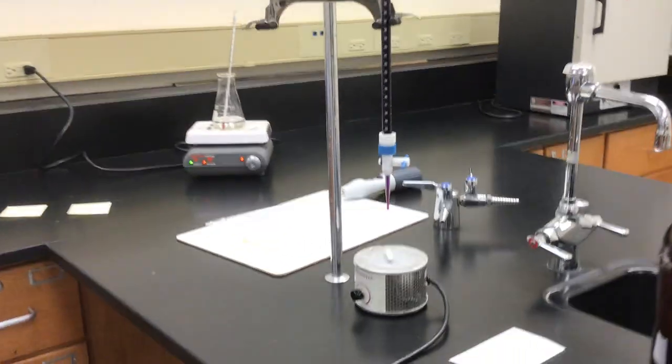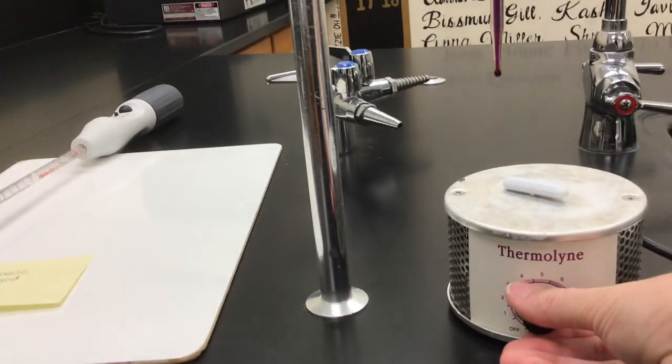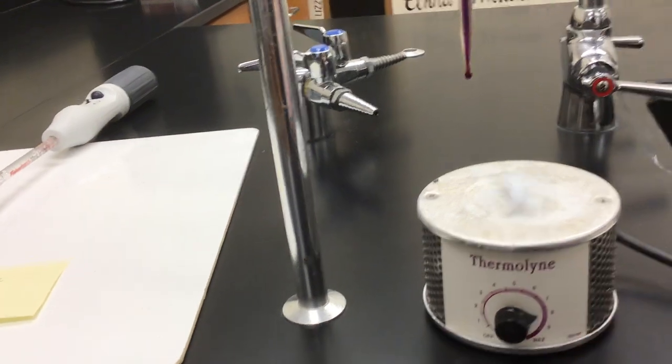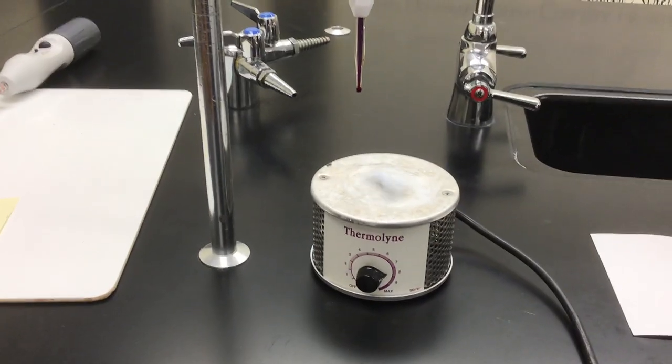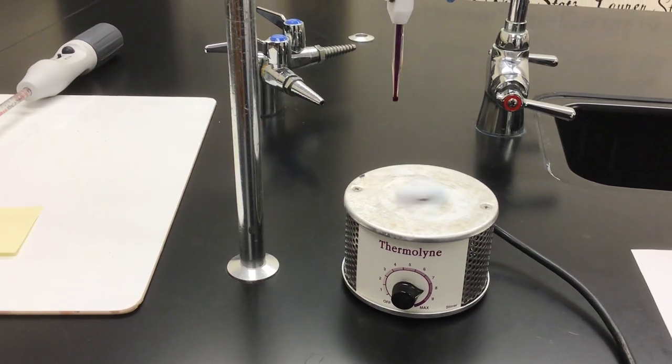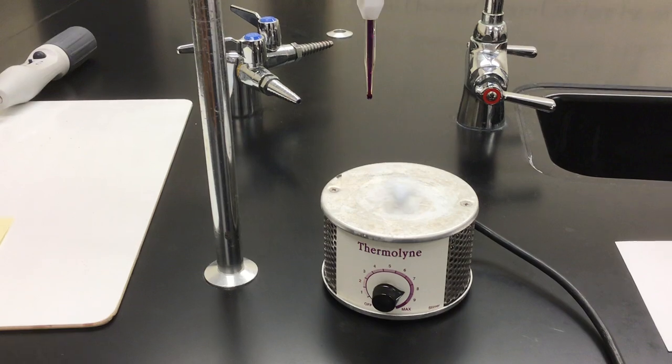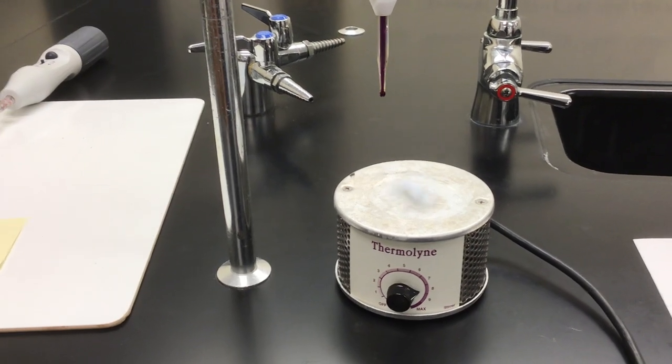If you haven't seen an auto stirrer before, what that guy is all about, I'll turn it on real quick for you to see. There's a little magnet at the top of that thing, and we're going to put that magnet into our oxalic acid solution in just a minute. And it will do the swirling and stirring of our solution for us.